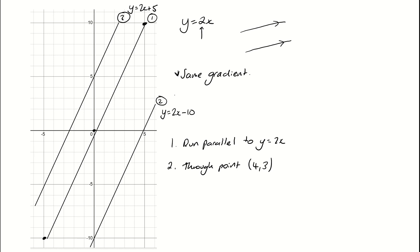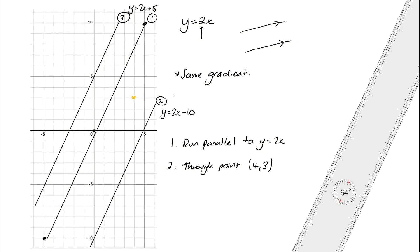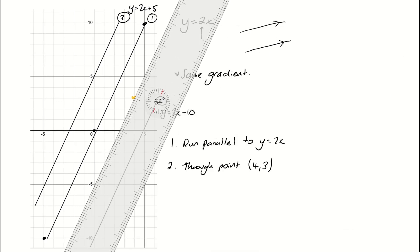4, 3. So if I find 4, 3, 1, 2, 3, 4, 1, 2, 3 up, it needs to go through here. So the line of interest, if I get my ruler back out, is going to be, has to be this line here, so that one.